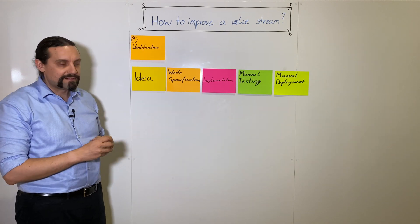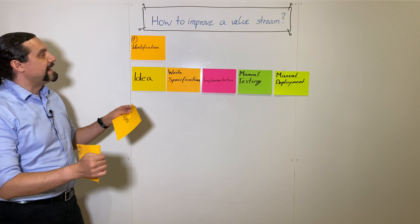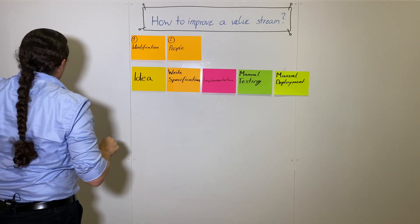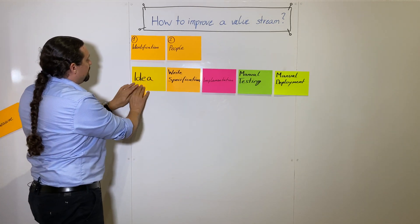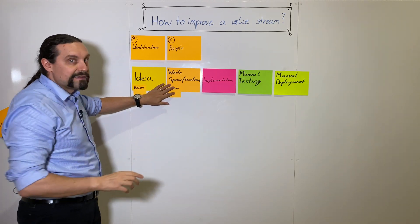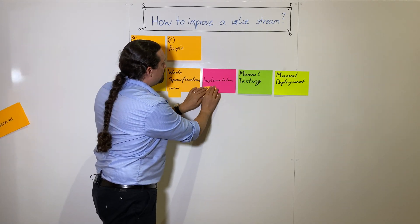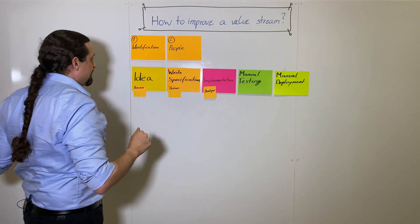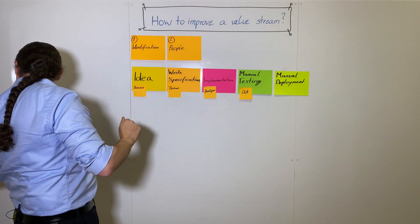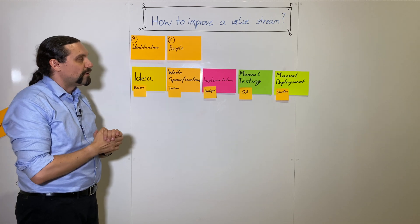Of course this is completely simplified. When we have done that, we are going to identify the people who are working in this value stream. In the idea phase we have the business. The business is also writing the business specification, and the developers are implementing the features. The quality engineer is manually testing this feature, and operations is going to manually deploy this feature.